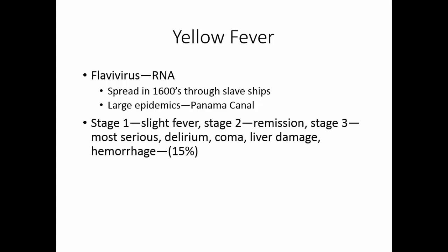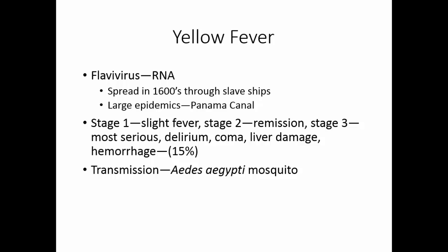In stage 1 of yellow fever there is a slight fever; in stage 2, a period of remission. About 15% of people progress to stage 3, the most serious stage, with delirium, coma, liver damage, and hemorrhage. These people may vomit blood, and because of severe liver damage they develop cirrhosis — this is why yellow fever was sometimes called yellow jack. Transmission is through the bite of the Aedes aegypti mosquito. Treatment is primarily supportive care, as there are no effective antivirals. Prevention is through mosquito control, and a vaccine is now available.